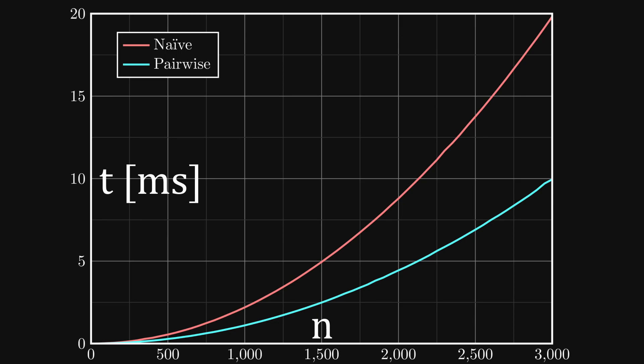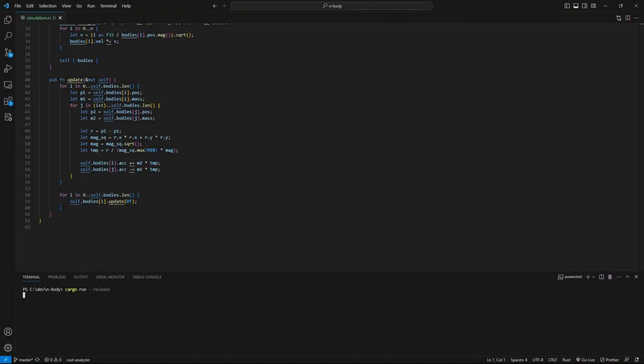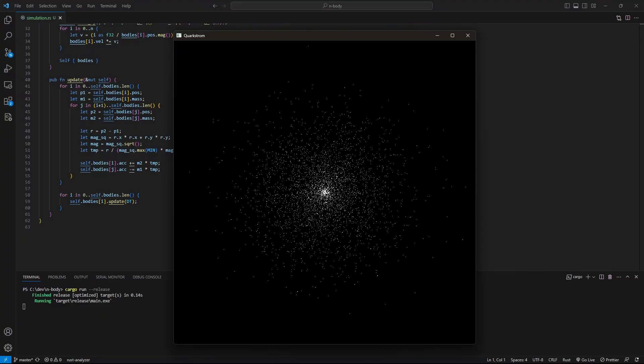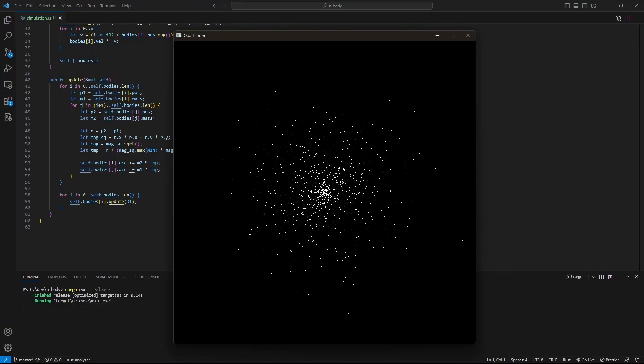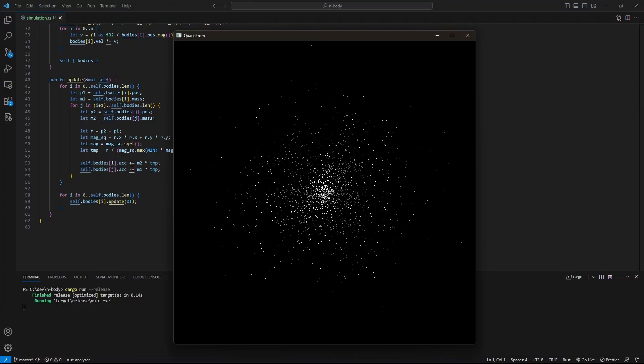You might have noticed that there's something that I've glossed over, and that's how this vector of bodies in the simulation became a window on the screen with circles flying around. And for that, I'll have to send you to my last video, where I went over exactly that, and a bit more.